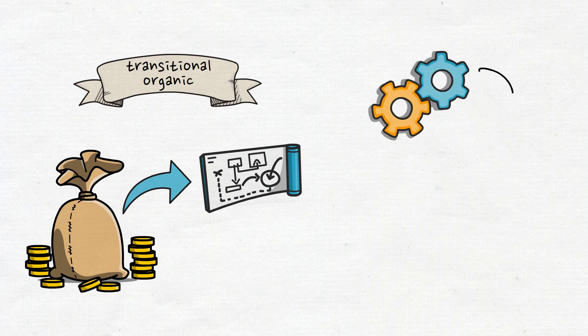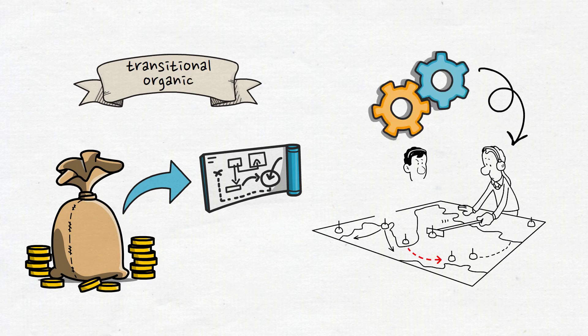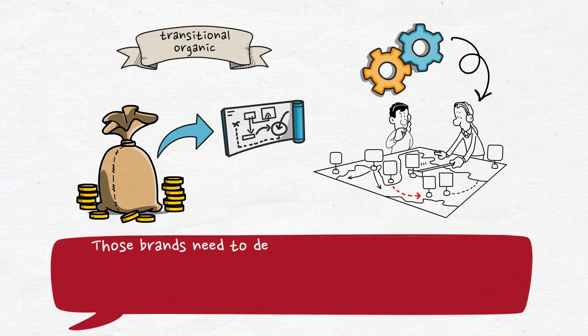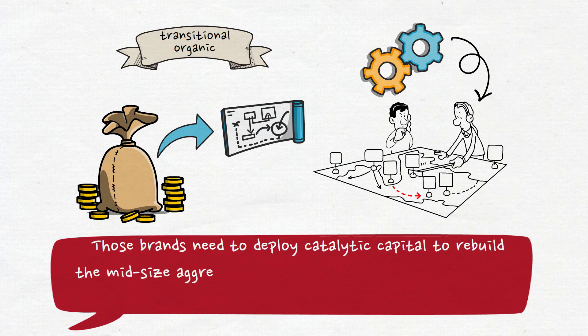We need to have systems that support these producers on their journey to first start monitoring. So those brands need to deploy catalytic capital to rebuild the mid-size aggregation that is scalable and then it needs to also support the transition through commitment.